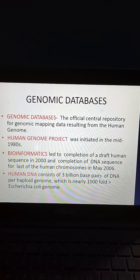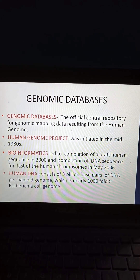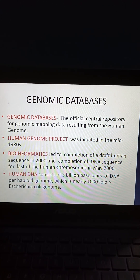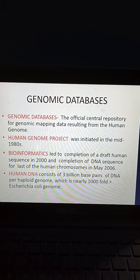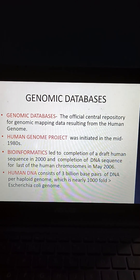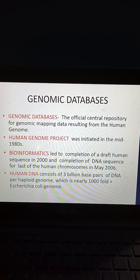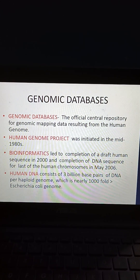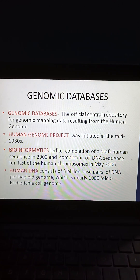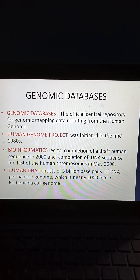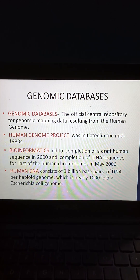What is a genomic database? Genomic databases are the official central repository for genomic mapping data resulting from the human genome. The human genome project was initiated in the mid-1980s, and bioinformatics led to completion of a draft human sequence in 2000 and completion of the DNA sequence for the last of the human chromosomes in May 2006. Human DNA consists of 3 billion base pairs per haploid genome, which is nearly 1000-fold more than the Escherichia coli genome.